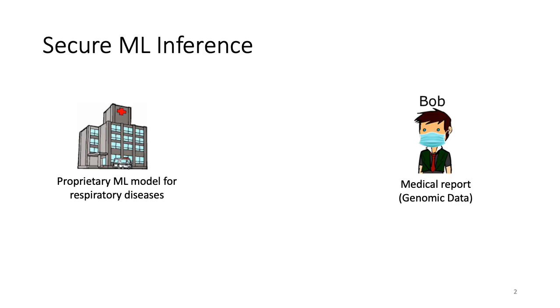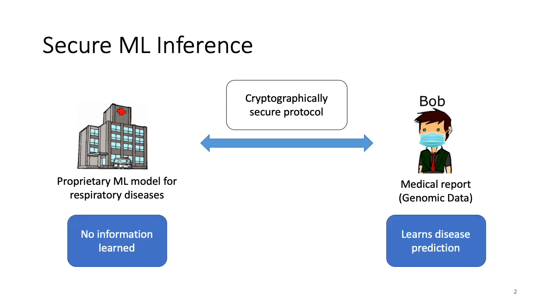We focus on the problem of secure machine learning inference in this work. Consider a hospital who holds a pre-trained ML model and is willing to provide inference service to external patients as long as the ML model remains private from these patients. Now consider a patient Bob who wishes to avail this service by feeding it his medical data, but he wants to keep his sensitive medical records private from the hospital and just wants to learn if he has the disease or not. This is where cryptography comes in and provides an elegant way to keep both the parties happy. Both the parties can execute a cryptographically secure protocol between themselves such that at the end of the protocol, Bob learns a disease prediction and neither of the parties learn the other party's inputs.